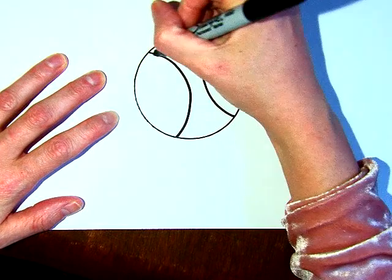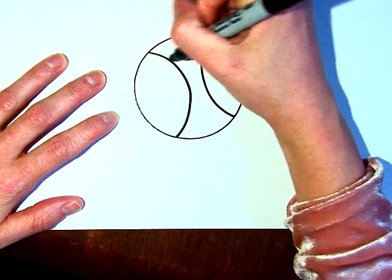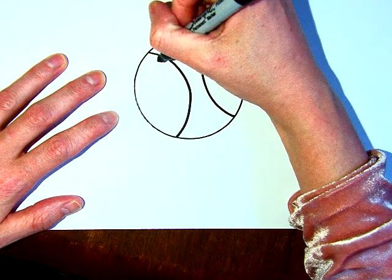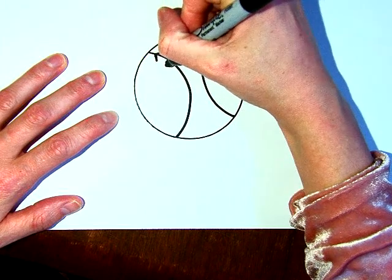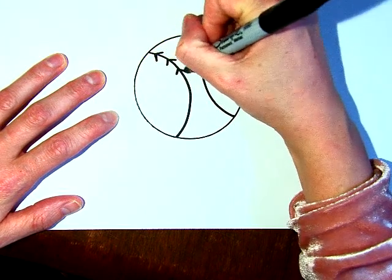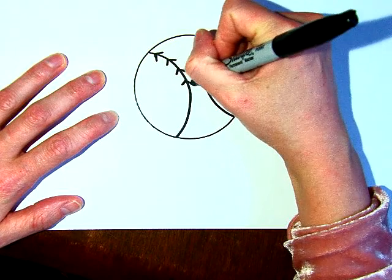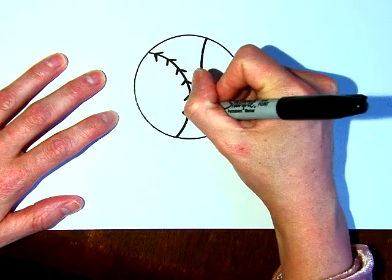And then some people just do them like straight across, but if you really want this to look like a good baseball or softball, you can make them angled. So in, and then down, in, down, in, down.